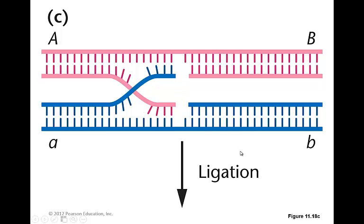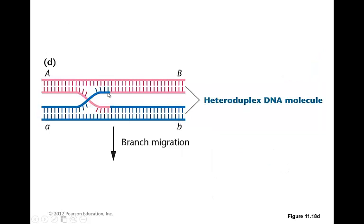The next step is going to be ligation, in which the gaps between this chromosome and this chromosome, this chromosome and that chromosome, are sealed. And at this point, you have a complex where the DNA is going to be associated with one another.